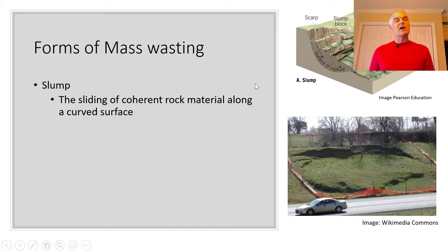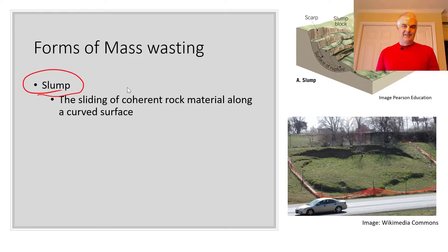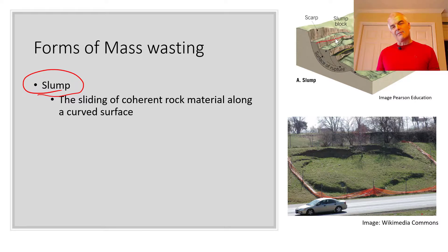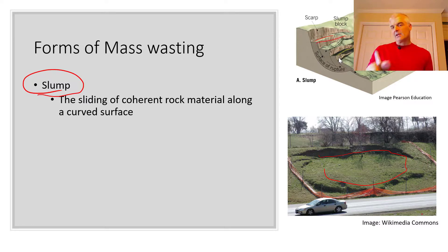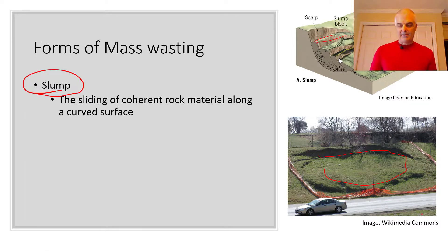Let's talk about the slump. The slump — it's when the ground slumps, it kind of just falls. So you've got a rupture right here and you end up with these sort of flat spaces. You can see that in this real picture of a slump, and it's kind of like the whole thing shifts downward. Let's take a look at a video of an event where it's actually happening.